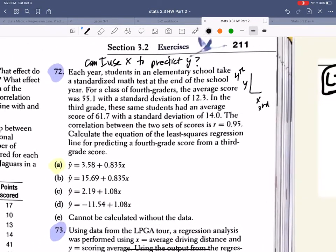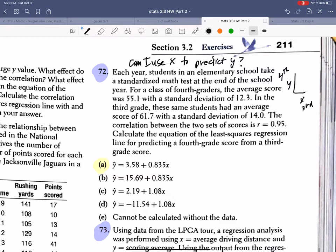Now let's take a look at 72. It says, each year students in an elementary school take a standardized math test. For a class of fourth graders, the average score was 55.1 with a standard deviation of 12.3. In the third grade class, these same students have an average score of 61.7 with a standard deviation of 14.0. The correlation between these two sets is 0.95. Please calculate the equation of the least-squared regression line predicting fourth grade using third grade. So because they say that, we know which one is x and which one is y. In this chapter, we've learned, can I use x to predict y? So we're thinking, can I use the third grade scores to predict the fourth grade scores?